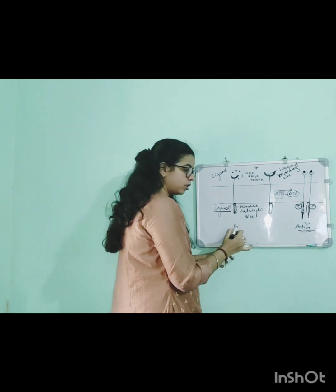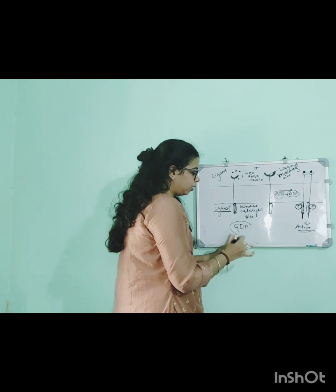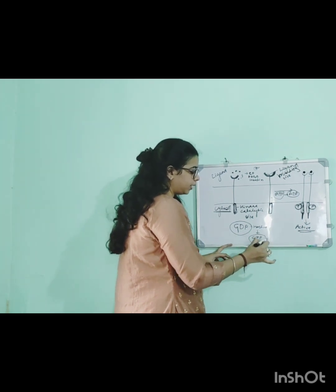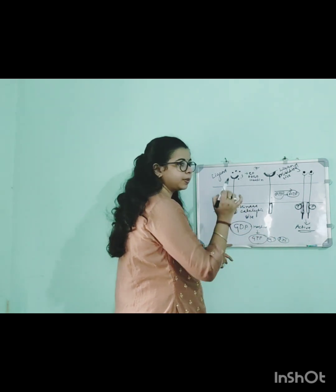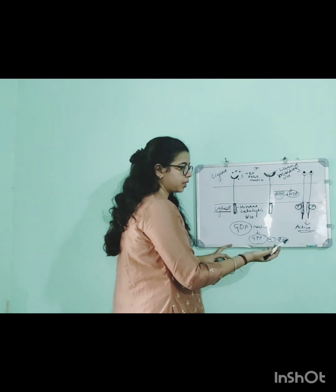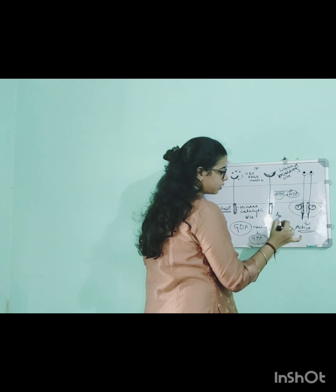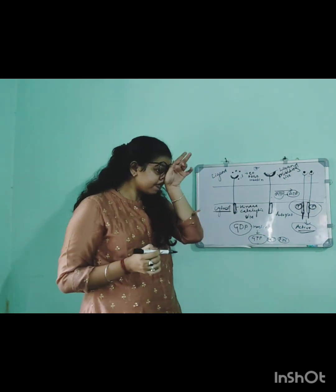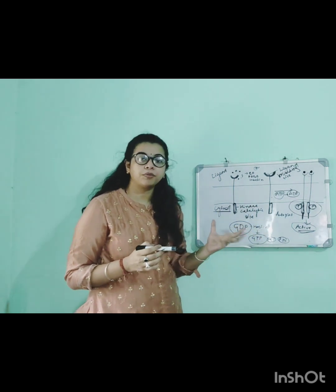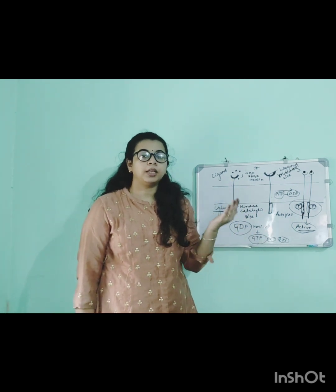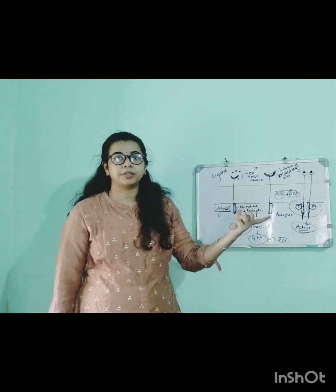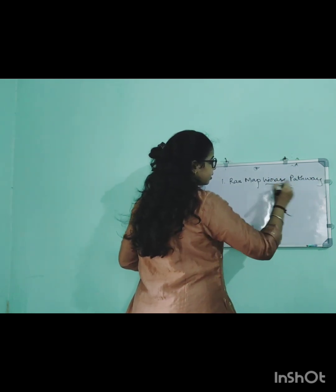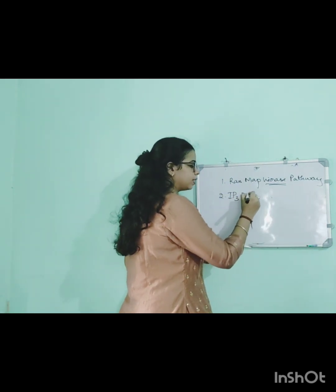If you remember GPCR, when the GPCR receptor was in the GDP state it was in an inactive form, and when the ligand came and bound it converted to GTP and the alpha and beta-gamma subunit got dissociated, activating the GPCR. Similarly, after this autophosphorylation process, the enzyme-linked receptor gets activated and activates certain other substances. This pathway is followed by kinase pathways.